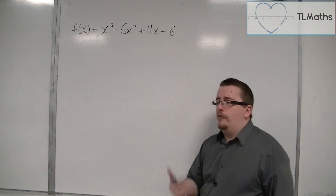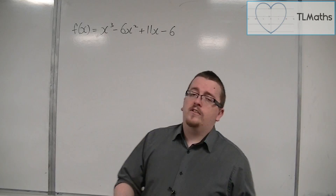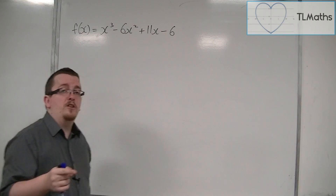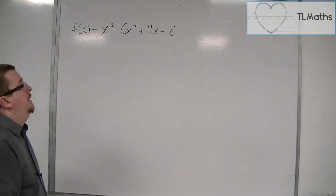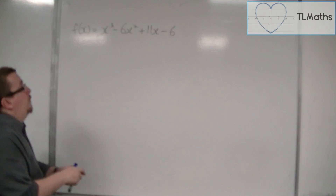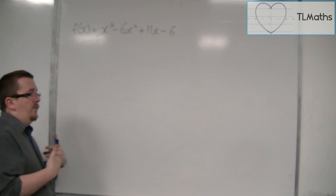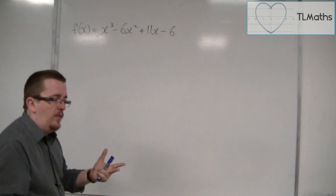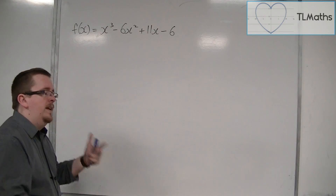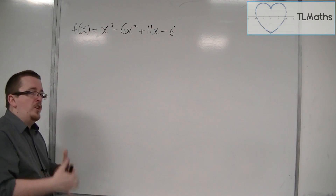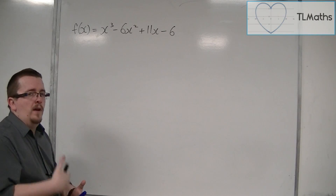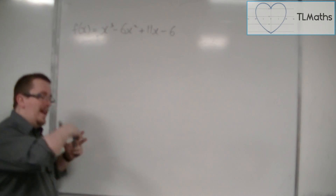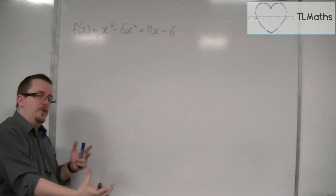A quicker way for cubics is to find one factor and then use polynomial division. What we've done in the previous video is work through just using the factor theorem. In this video, I'm going to show you how to do the factor theorem and then polynomial division.